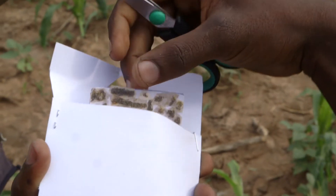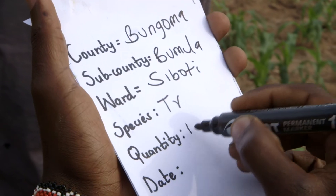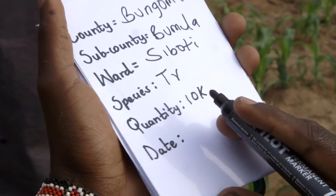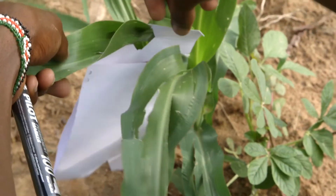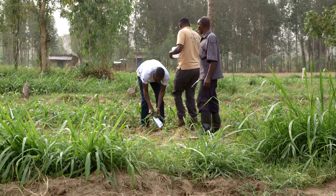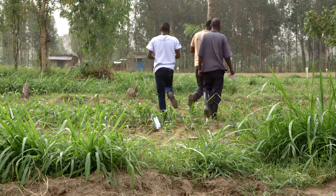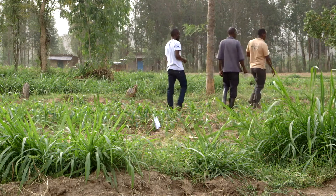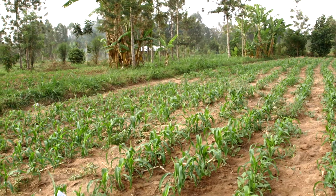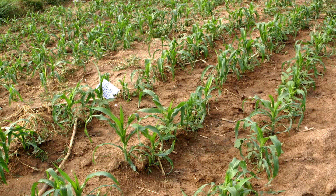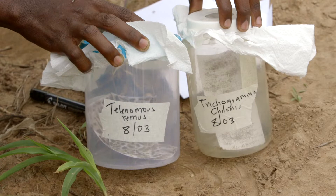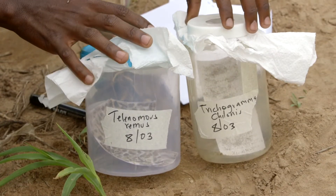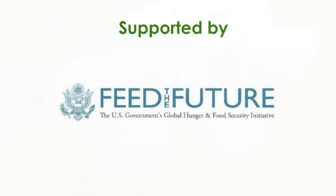You will need six parasitoid cards per acre — that's equal to around 60,000 parasitoids. Scout your farm for fall armyworm eggs or the female moth. Once you've found the eggs, place the card in a piece of paper and attach it to your maize. Spread the cards equally around your field. It is best to do this in the morning or evening and make sure it's not raining. Once you have released the parasitoids, be careful not to spray with pesticides that will harm them. If you do this, the population should keep growing and win over the fall armyworm pest. Parasitoids are still being developed and will be available to farmers in the year 2023.